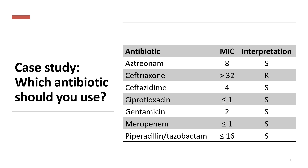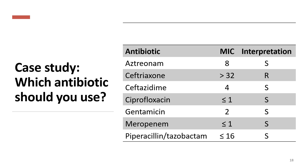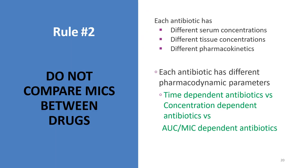Now consider another case with a sensitivity report where all antibiotics are sensitive and only one is resistant. There are rules to follow. Rule 1: always start with a beta-lactam antibiotic if possible, especially in severe infection, because there is a strong evidence base supporting their use. Rule 2: do not compare MICs between antibiotics, because every antibiotic has a different serum concentration, tissue concentration, and different pharmacodynamic parameters — time-dependent versus concentration-dependent — so do not compare MICs between antibiotics.